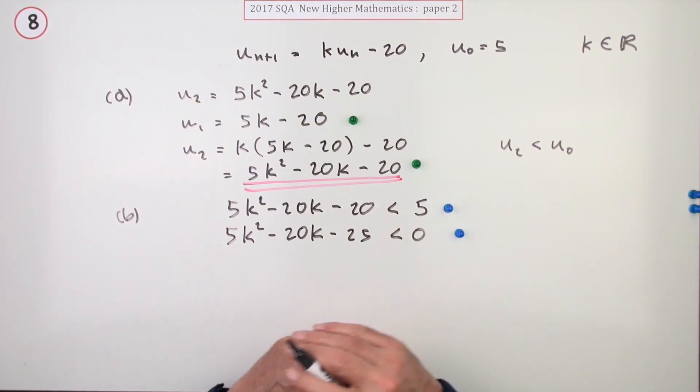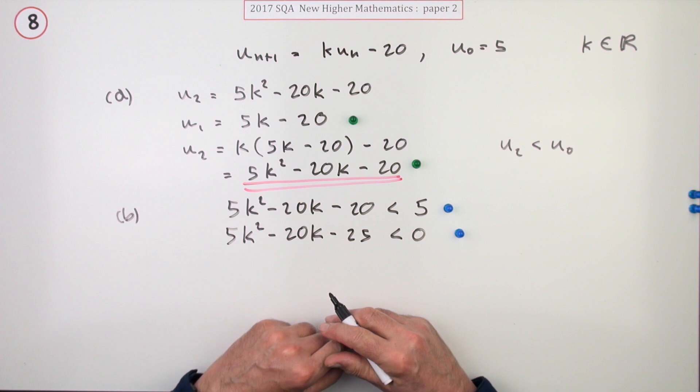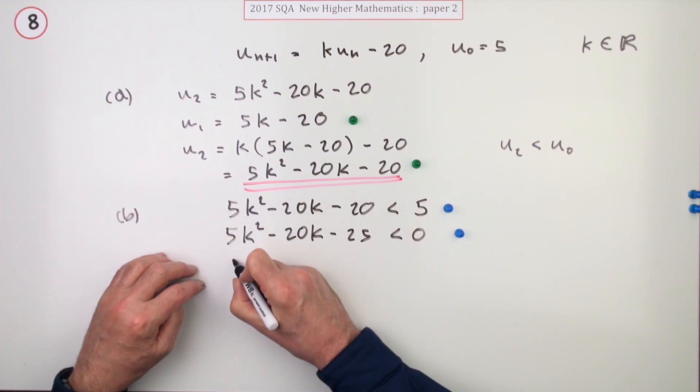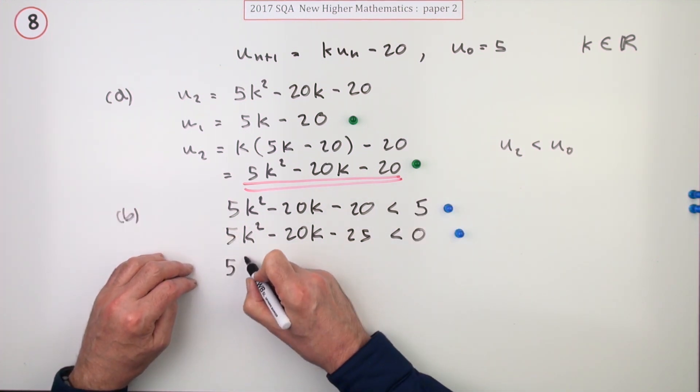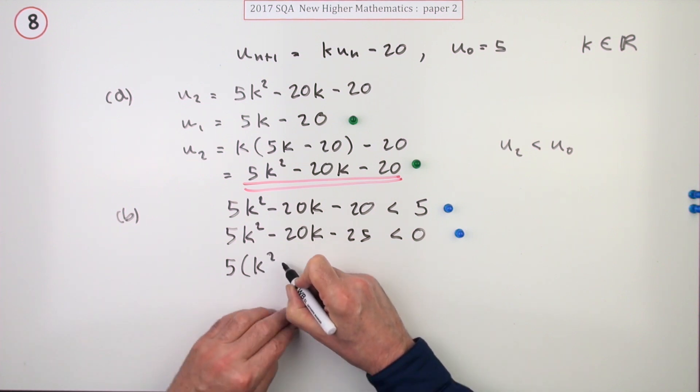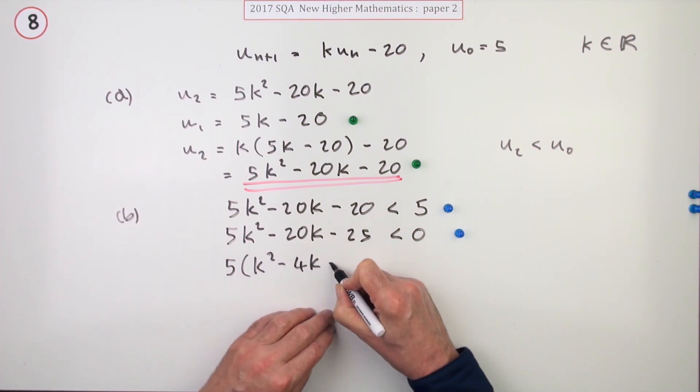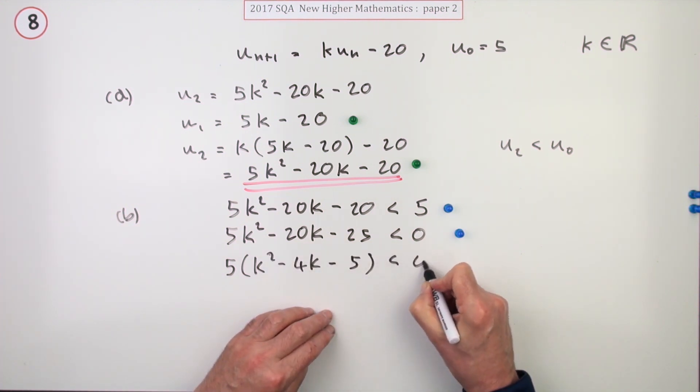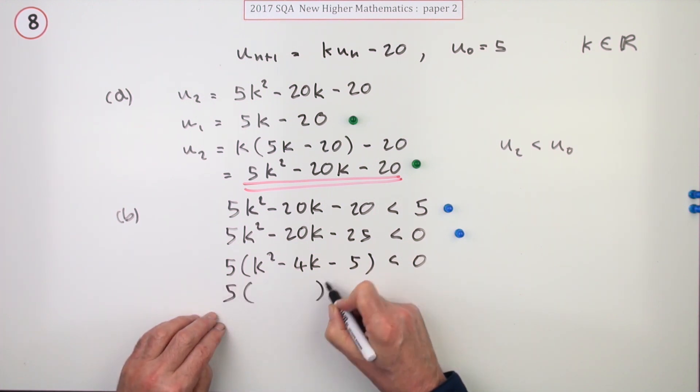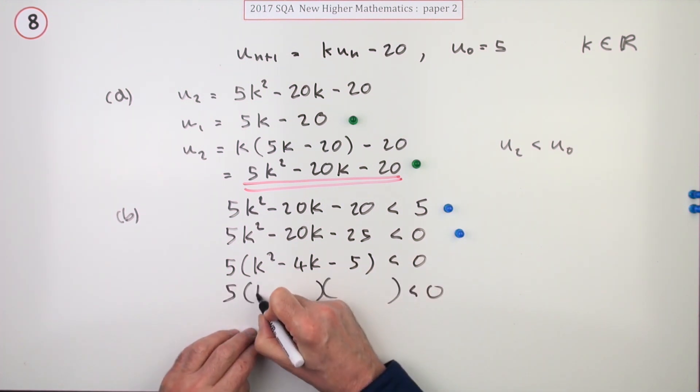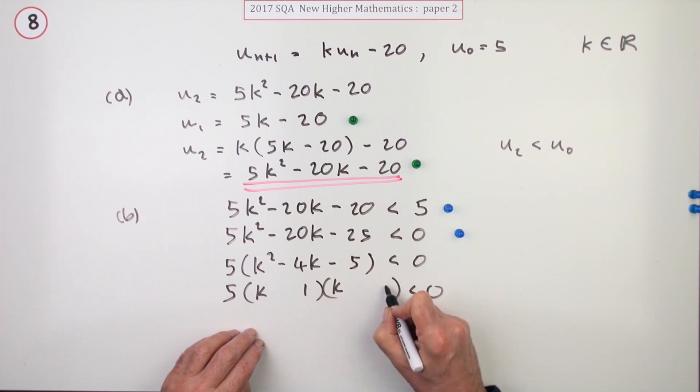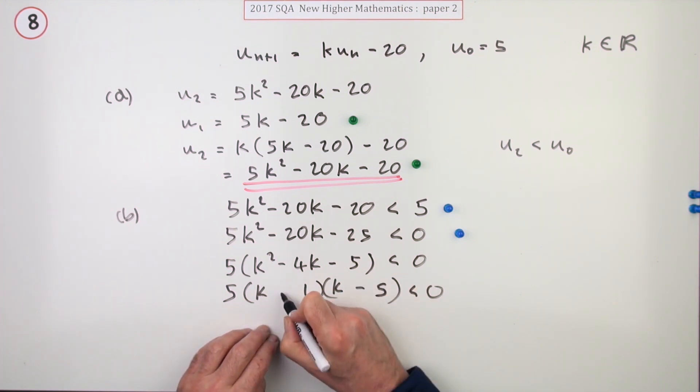To do that you want to factorize it. Let's keep the 5 in. 5 is not going to affect it at all. 5 times k squared minus 4k minus 5 is less than zero. So 5 times, and it's a trivial factorization, k plus 1 times k minus 5.